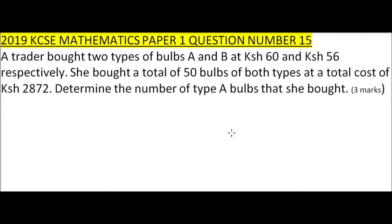Number 15, 2019 Paper One. We are told a trader bought two types of bulb, A and B, at 60 Kenya shillings and 56 shillings respectively. She bought a total of 50 bulbs of both types at a cost of 2872 shillings. Determine the number of type A bulbs that she bought.